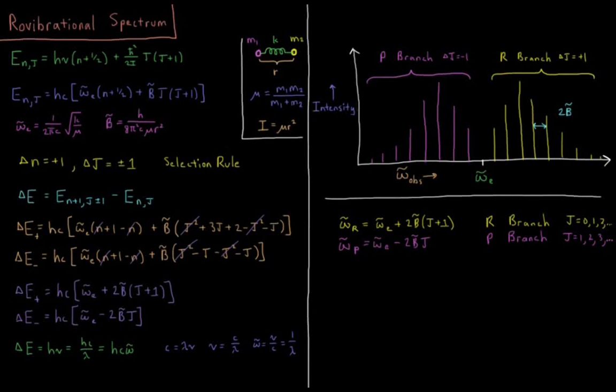This video will discuss the rovibrational spectrum of diatomic molecules using the rigid rotor and harmonic oscillator models. So we have our diatomic molecule here, two atoms of mass m1 and m2.